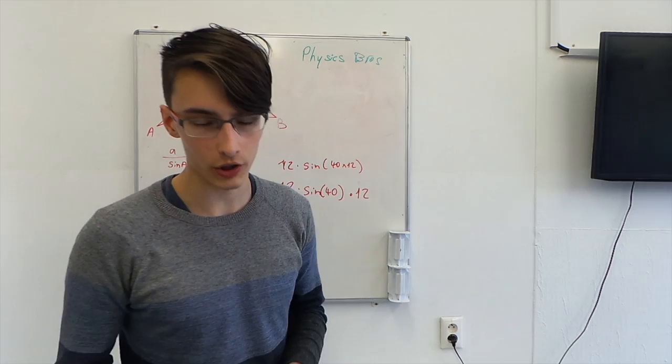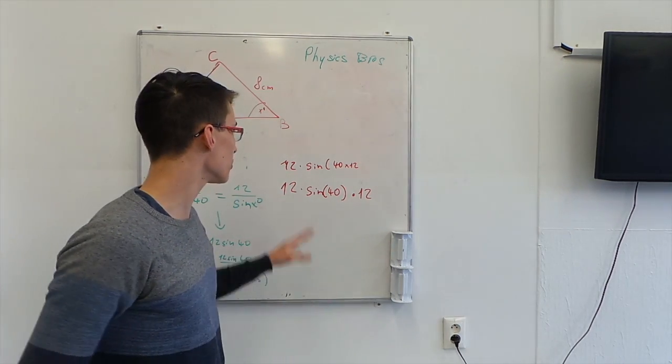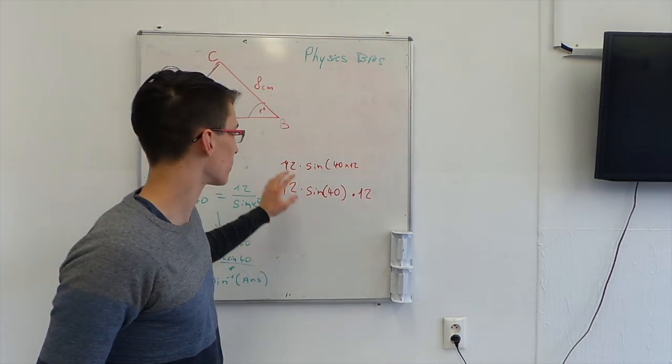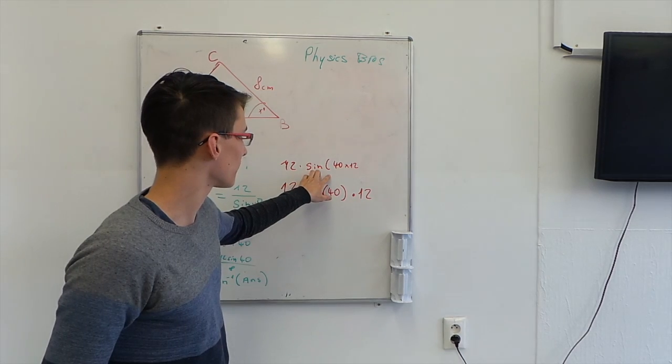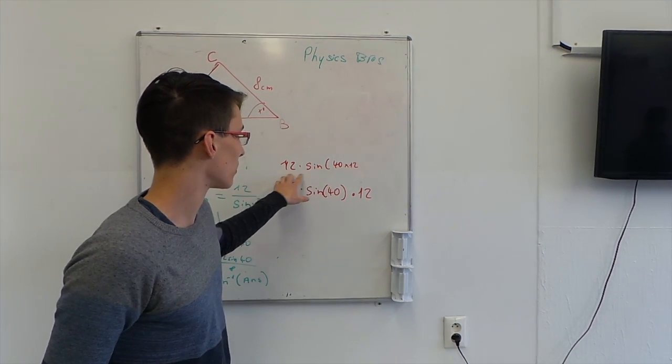Here I can illustrate the calculation visible on the board. Assume you're calculating this example, you want to multiply the sine function of 40 times 12 twice.